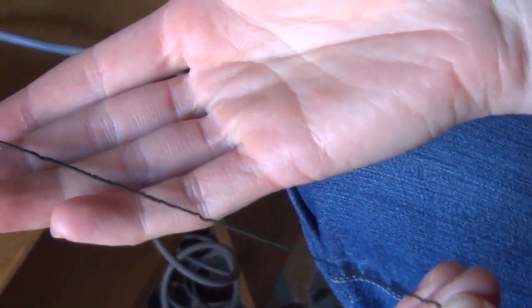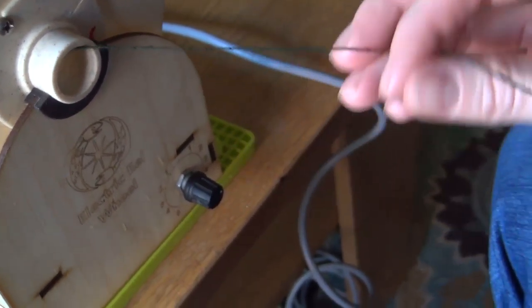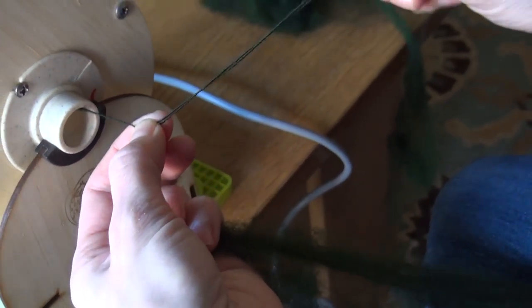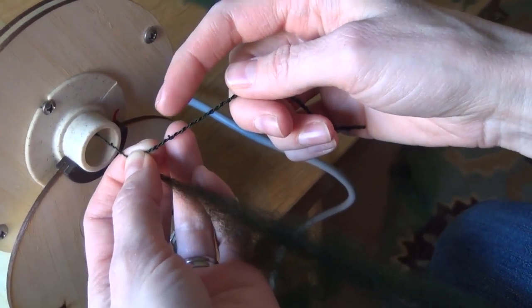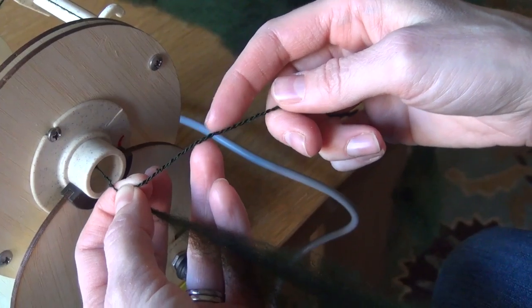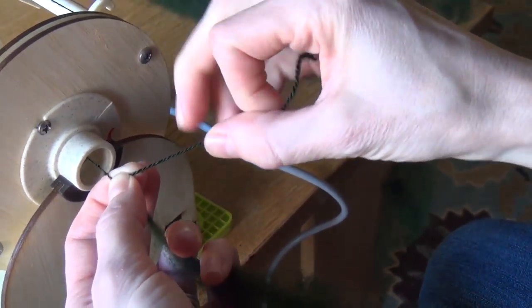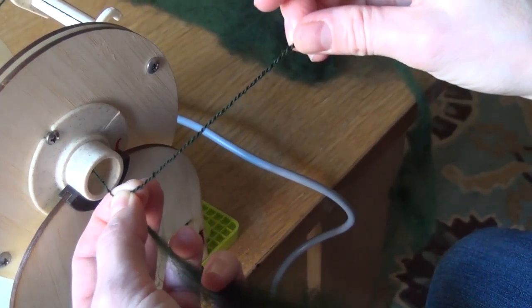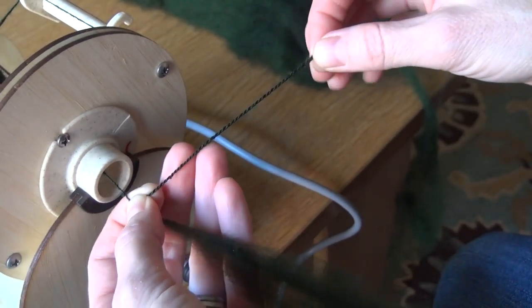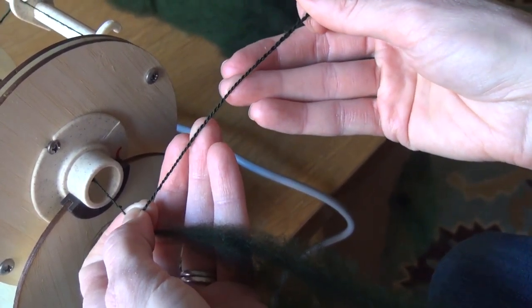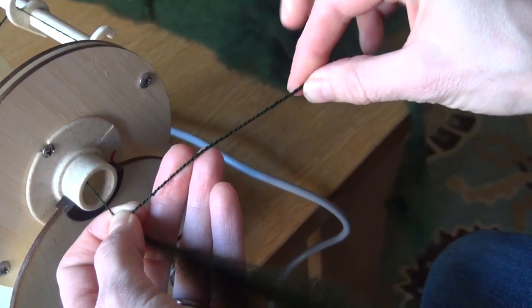As I'm going, it's kinking up on itself. You can see there's some places that still haven't twisted back on itself. It's pretty hard and stiff, more rope-like rather than yarn-like. This would be overspun for me—it wouldn't be comfortable to knit. It's too hard.